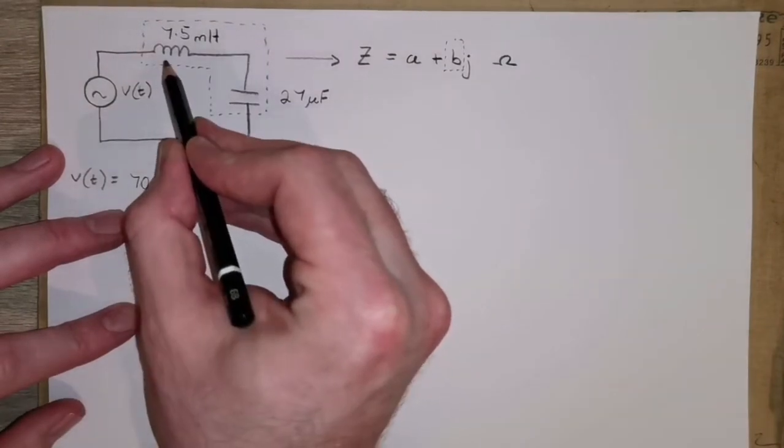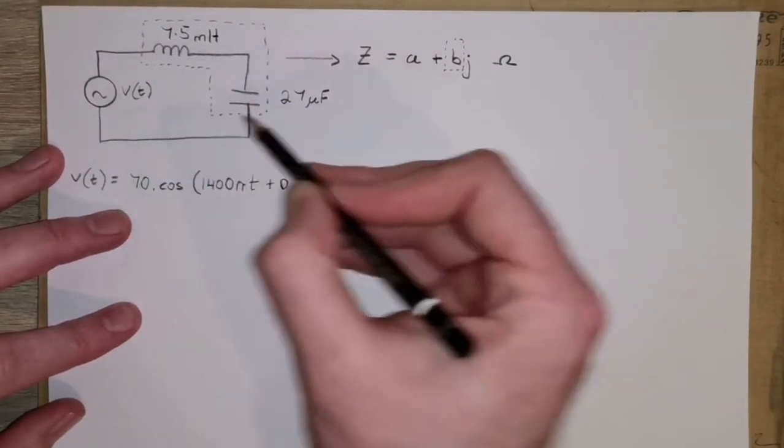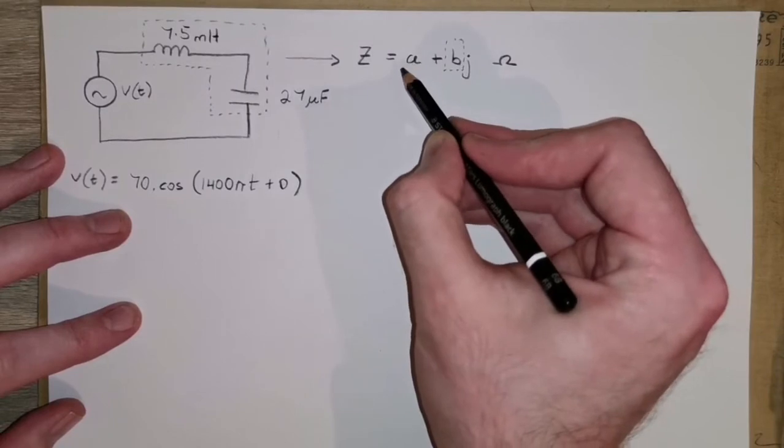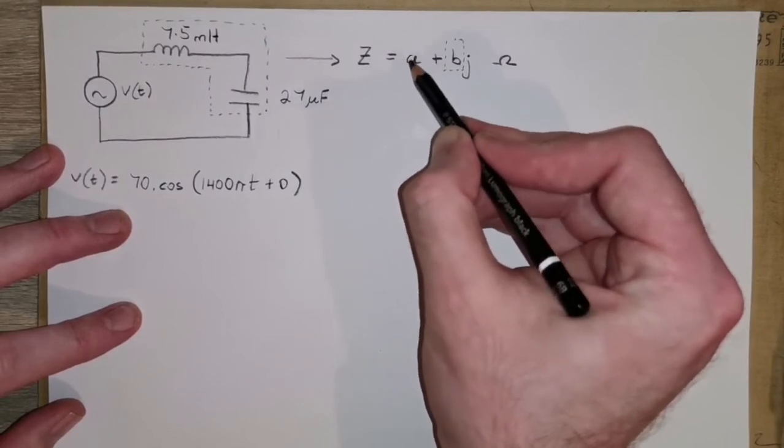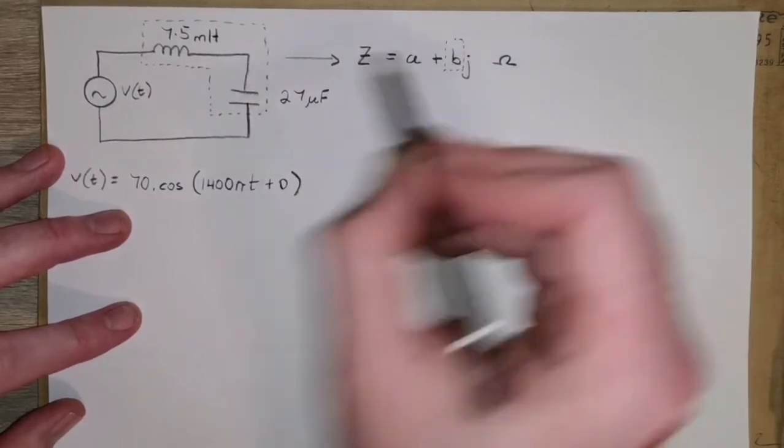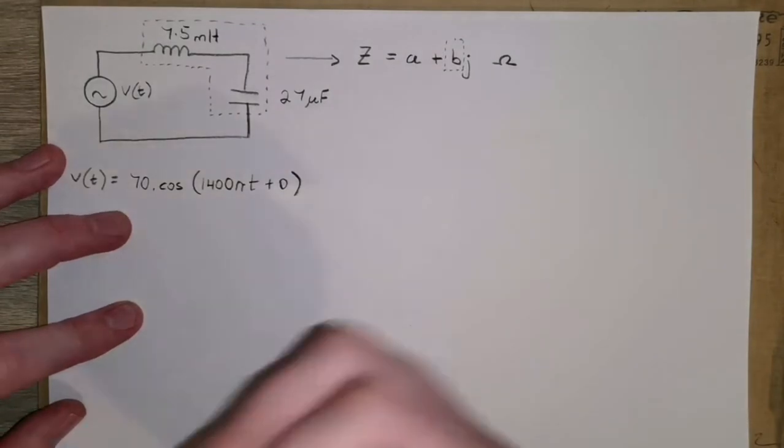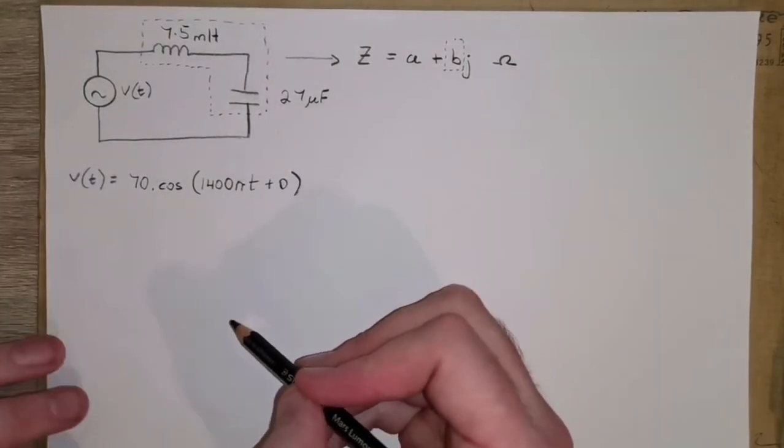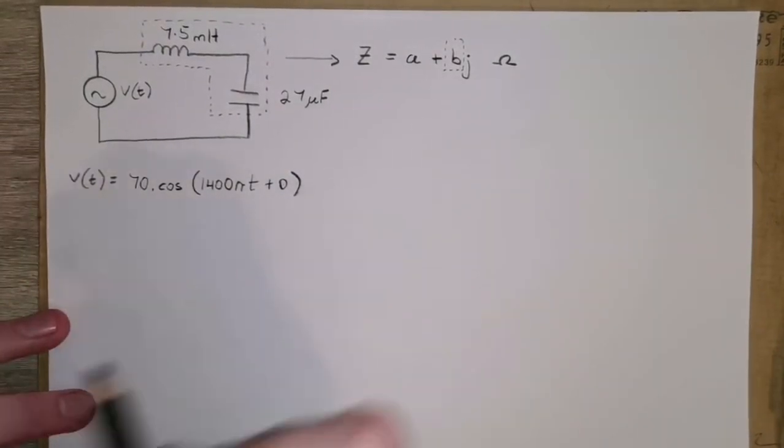Now, this circuit only has inductors and capacitors, so what we are going to see is that there is no real part of the impedance, and that the entire impedance is reactive, but we still do the same approach as if there was a resistor in the circuit.